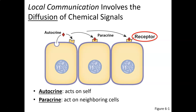Local communication largely involves diffusion of chemical signals, though local electrical signals can be included as well. A local chemical signal works by diffusion and requires a receptor on the target cell. There are two types: an autocrine is a chemical a cell releases that feeds back and acts on itself, while a paracrine acts on a nearby cell — a different cell than the one that released the chemical. Both work by diffusion and don't travel long distances. Histamine is an example that can act as both an autocrine and a paracrine.